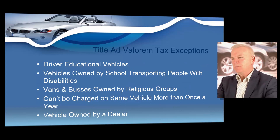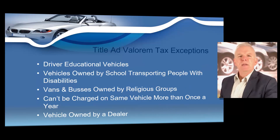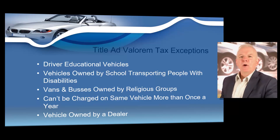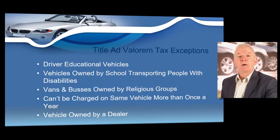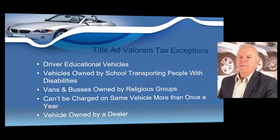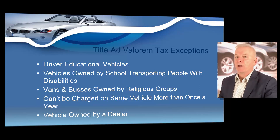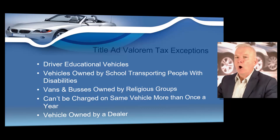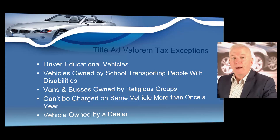There are some exemptions to TAVT. Vehicles sold to a customer to be used as driver educational motor vehicles are declared to be public property used exclusively for public purposes and are exempted from any and all ad valorem taxes. All motor vehicles sold to and owned by a school or educational institution and used principally for the purpose of transporting persons with disabilities or disabled students to or from such a school or educational institution are also exempted from all title ad valorem taxes. Vans and buses sold that are owned by religious groups are likewise exempt.